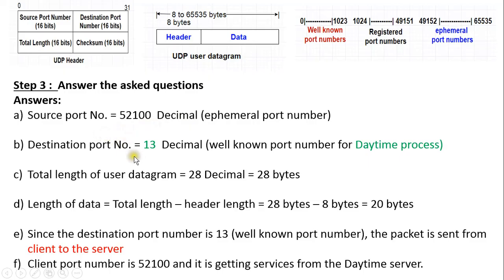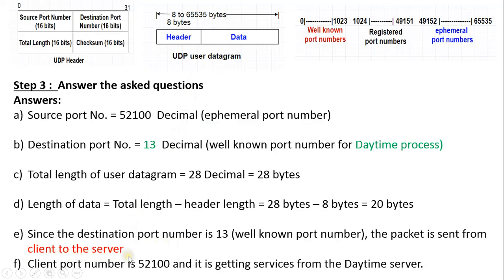The destination port number is 13 in decimal, which lies in the range of well-known port numbers from 0 to 1023. This well-known port number corresponds to a daytime process, so here the destination is a server process. Thus, the information is transmitted from the client to the server, because the source process is the client process and the destination is the server process.